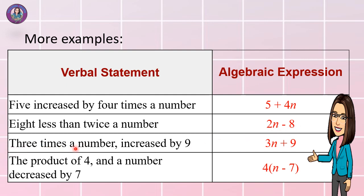Next: 3 times a number increased by 9 — that is 3n plus 9. The product of 4 and a number decreased by 7 — in algebraic expressions, that is 4n minus 7, or 4(n) minus 7.